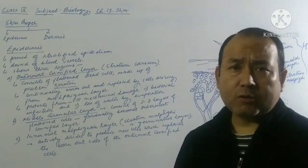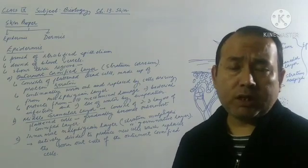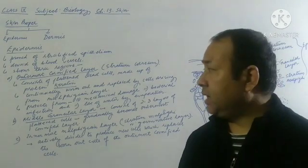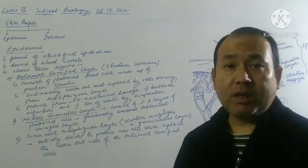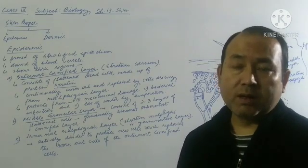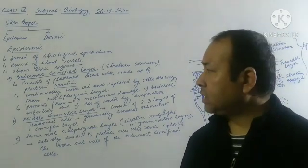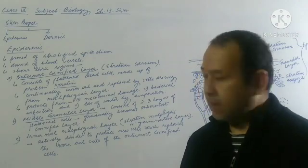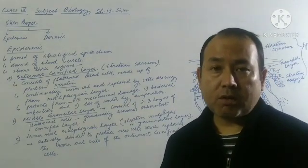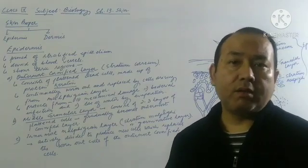In albinism, even the hair loses its color and the skin becomes almost pinkish in color, because with no pigment in the outermost layer, the blood capillaries get exposed, making the person appear pinkish. Albinism is a hereditary disease that can be transmitted from parents to offspring — their children also become albinos. This completes our discussion of the epidermis. We will discuss the dermis in the next video.